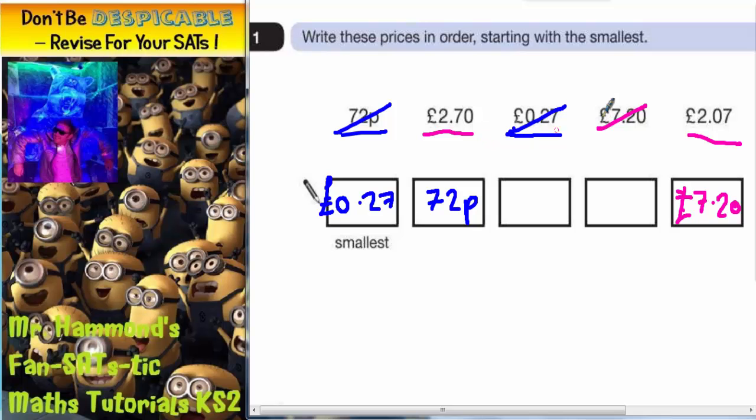So we've got two boxes to fill: two pounds and seven pence, or two pounds and 70p. Well seven pence is obviously smaller than 70p, so it's going to be £2.07, and then the only one left is two pounds seventy. And that is question one done.